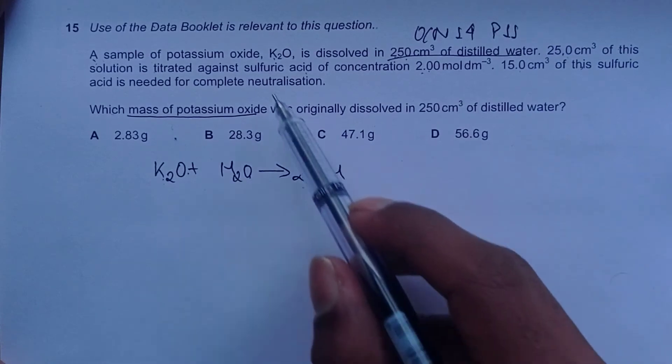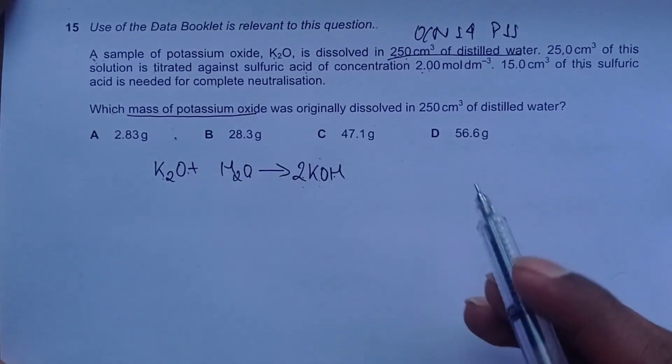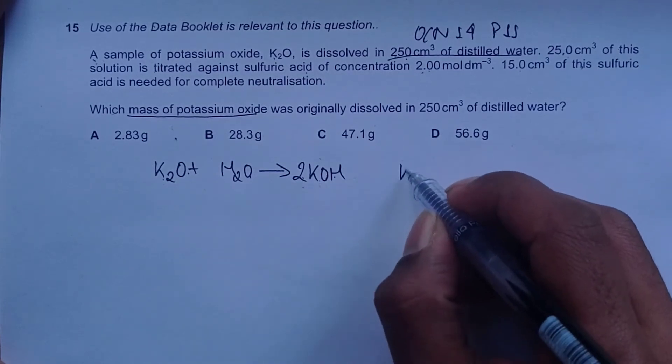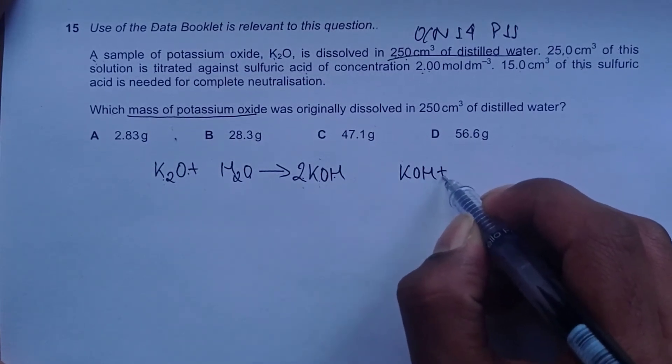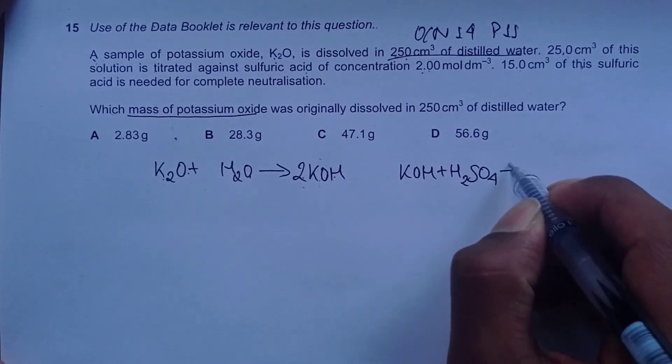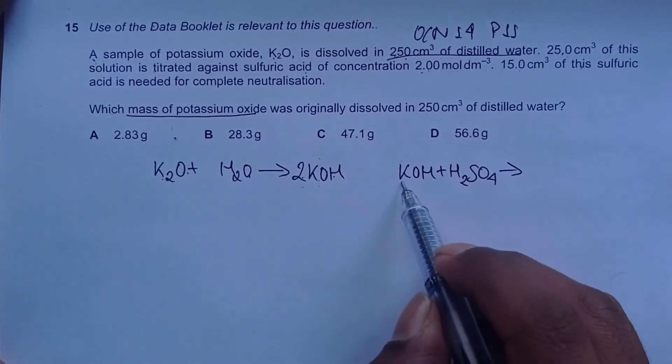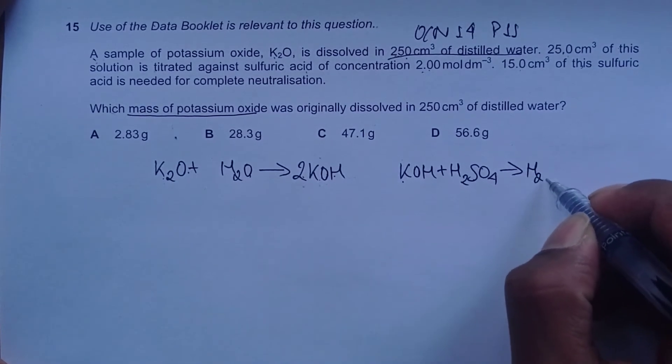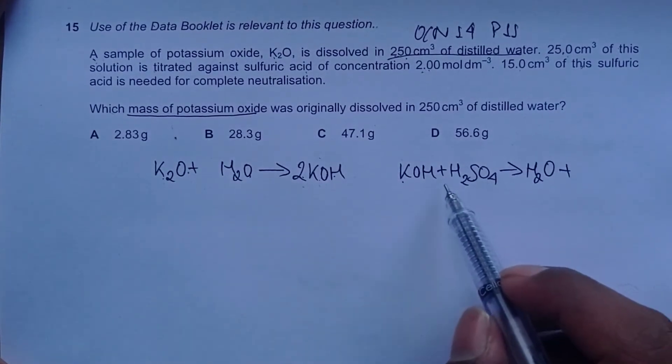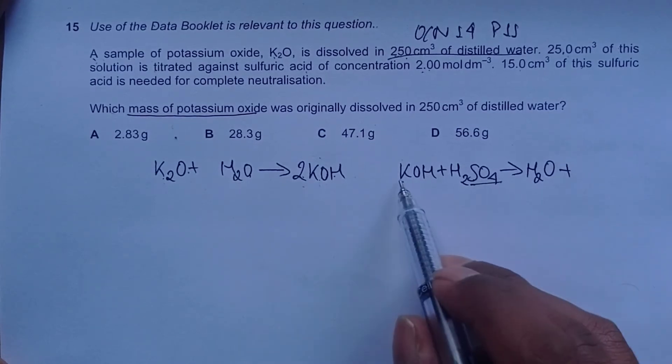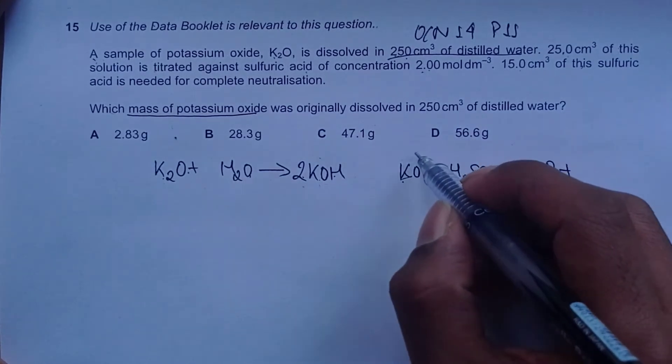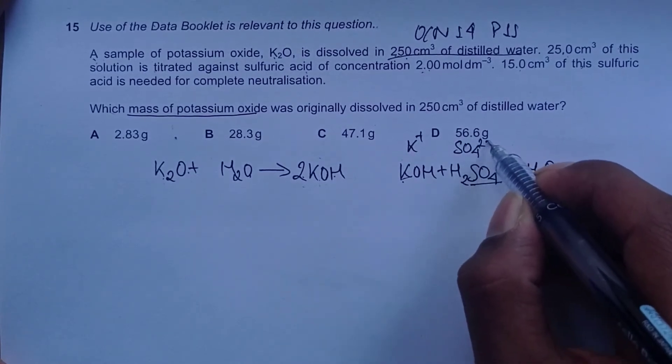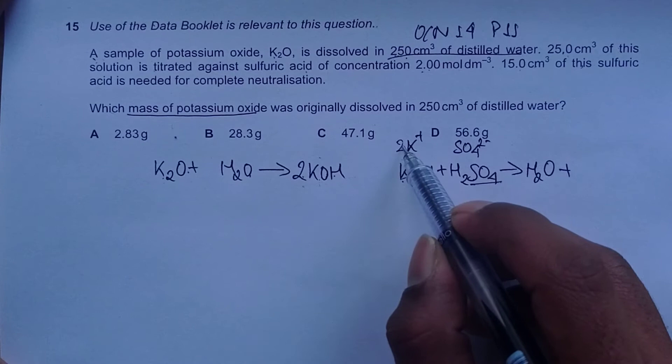We have 250 cm³ of distilled water and sulfuric acid. The reaction between sulfuric acid and potassium hydroxide: potassium hydroxide and sulfuric acid. This is a base and an acid, so acid and base should give us water and a salt.